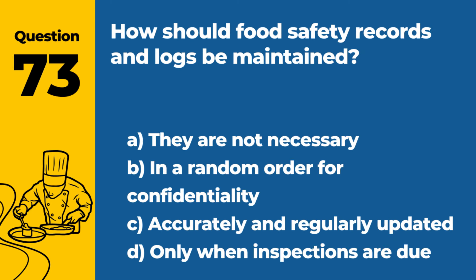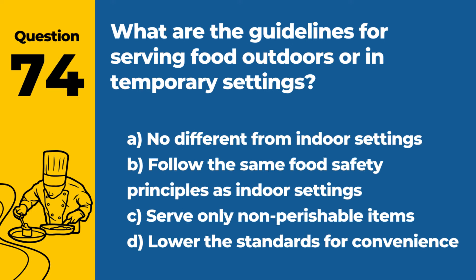Question 73. How should food safety records and logs be maintained? a. They are not necessary. b. In random order for confidentiality. c. Accurately and regularly updated. d. Only when inspections are due. Answer c. Accurately and regularly updated. Food safety records and logs should be maintained accurately and updated regularly to track food safety practices and compliance.